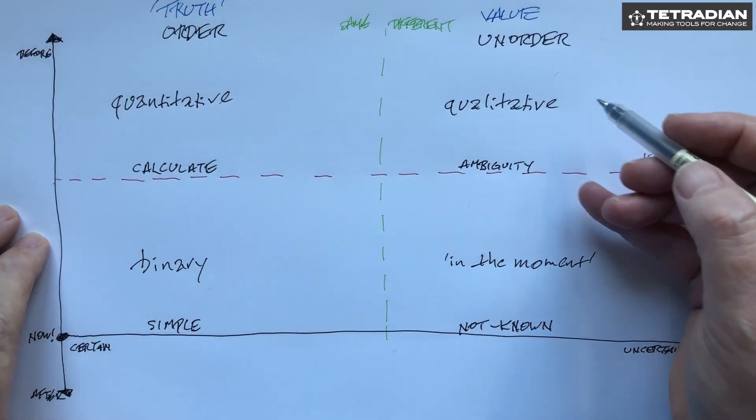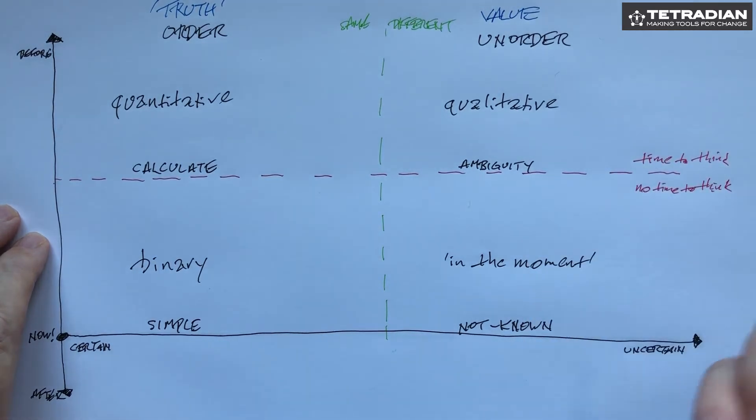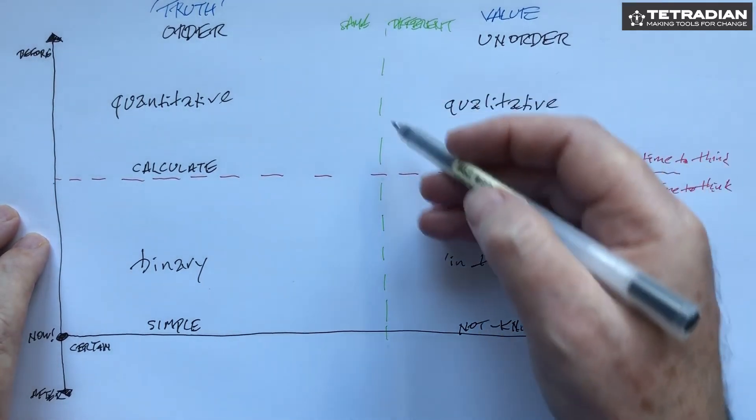Over here we have patterns, we have heuristics. We have recursion, we have things inside things, there are things that are fractal, but we've still got time to think. We're looking very much in terms of qualitative.